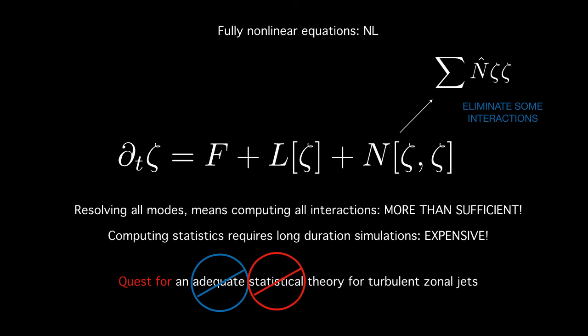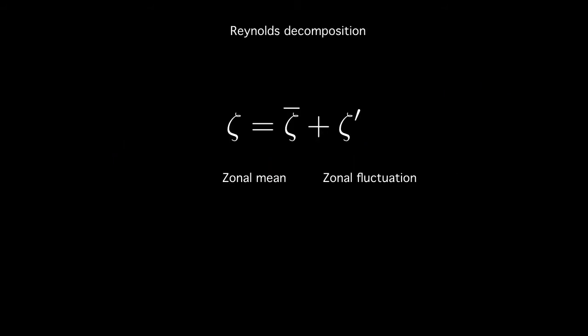So the first step we want to take is to eliminate some of these non-linear interactions and move towards a theory which is adequate. Our starting point is the Reynolds decomposition. Taking the mean in the zonal direction we can decompose the vorticity field into the zonal mean and the zonal fluctuation and these obey familiar properties the average of the fluctuation is zero that's an orthogonality property and the average of an average is an average so that's idempotence.